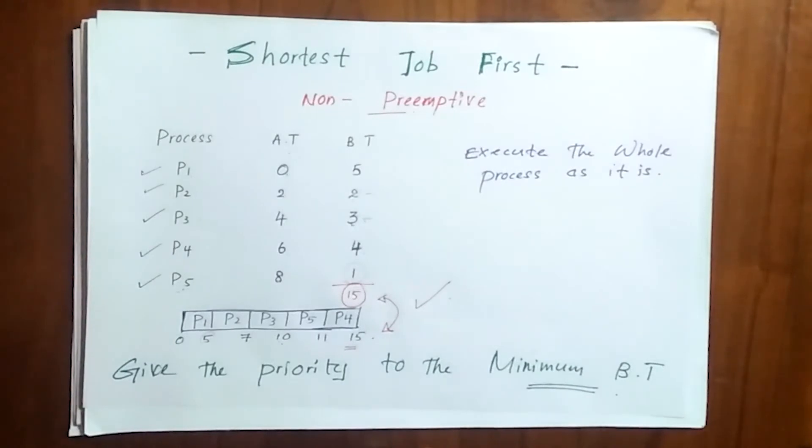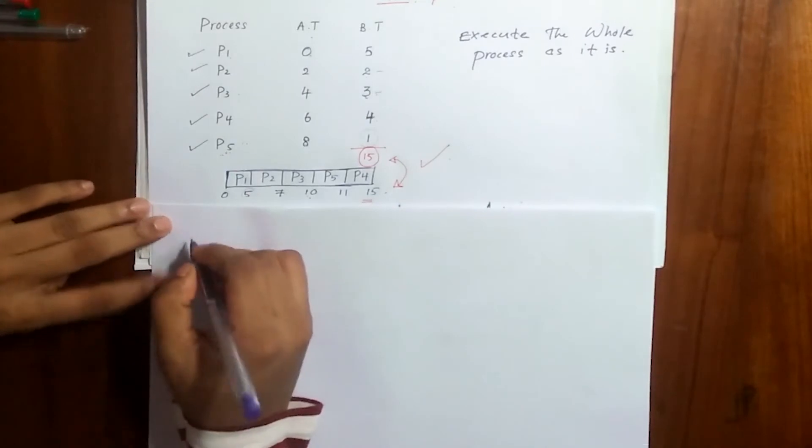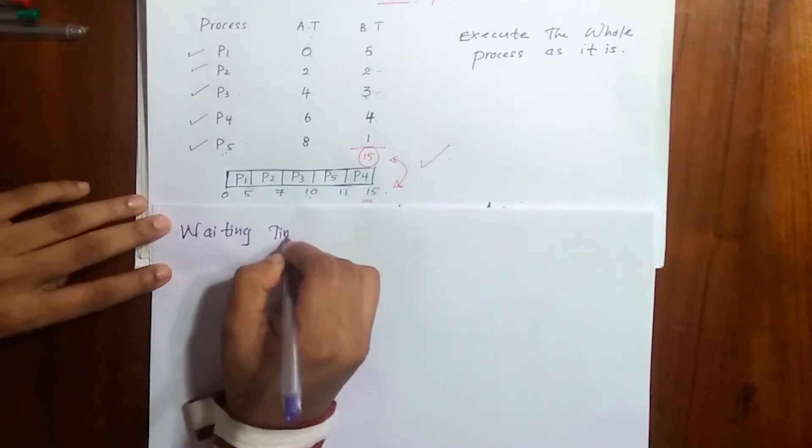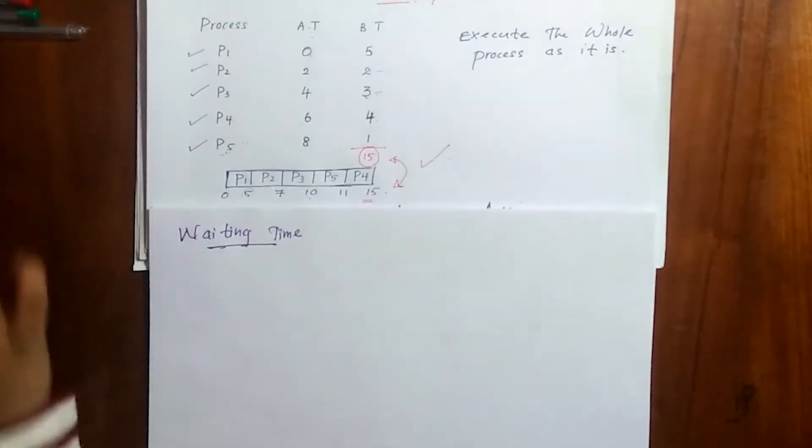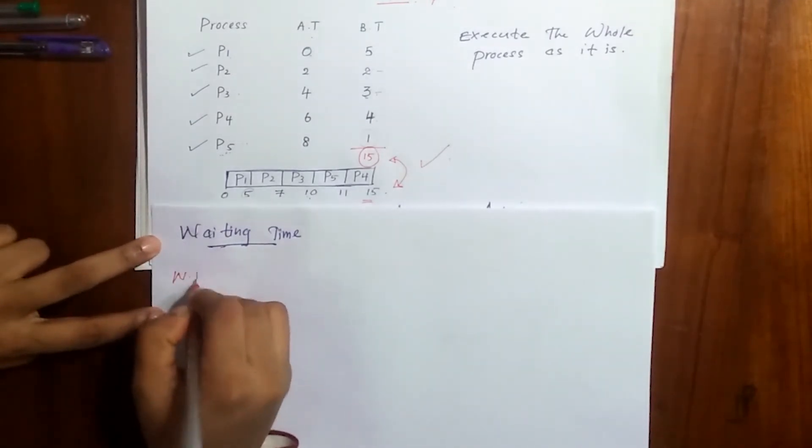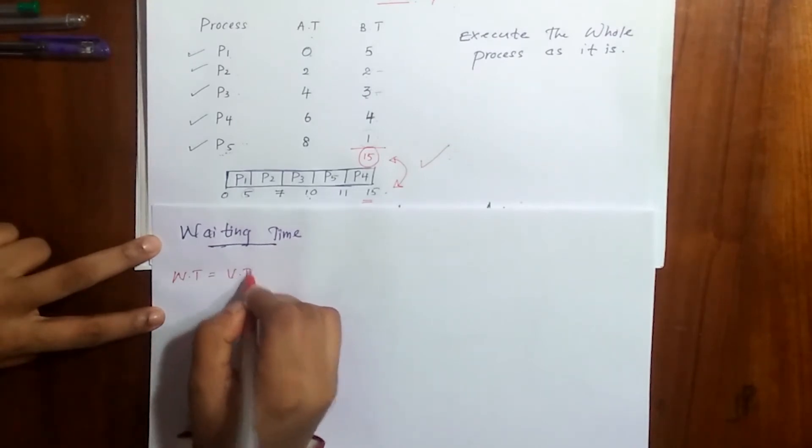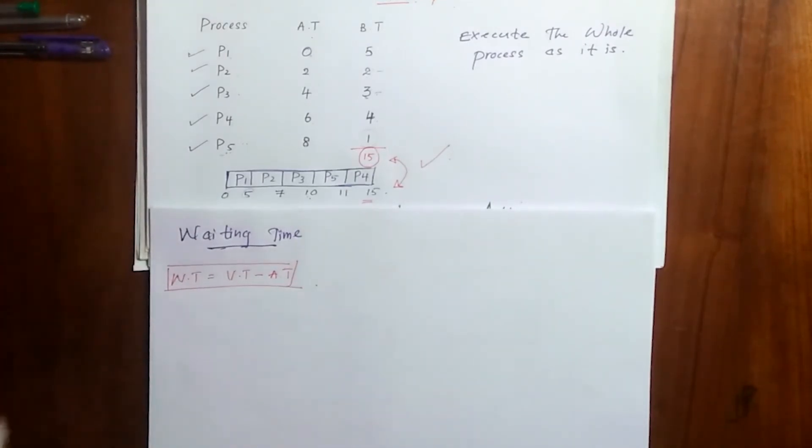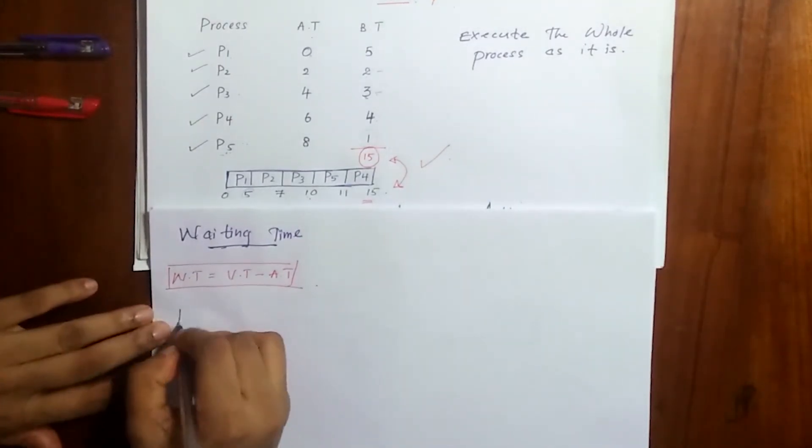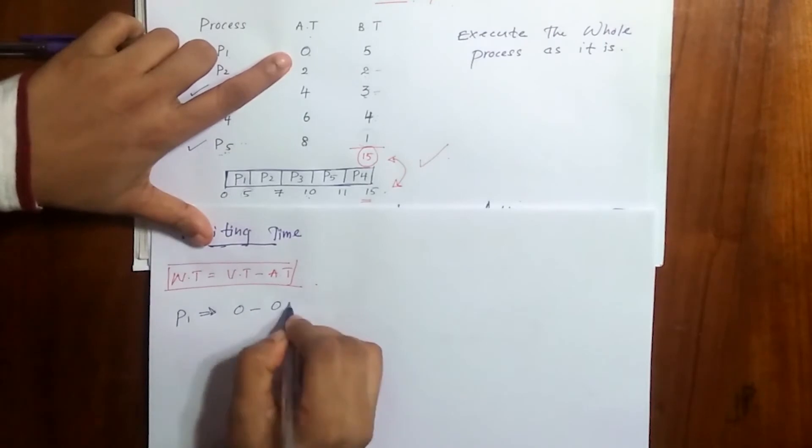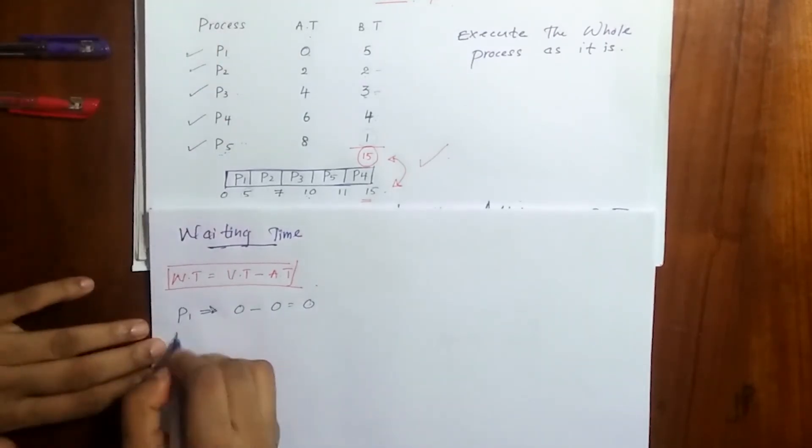Now we are done with the first step. Let's count the waiting time and turnaround time. Let's start finding waiting time. Now you know the equations very well, so I'll write it in a very short way.